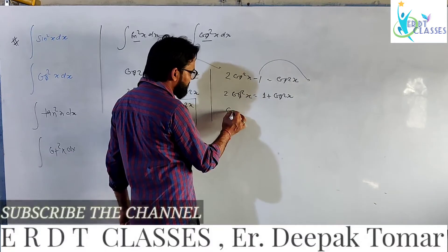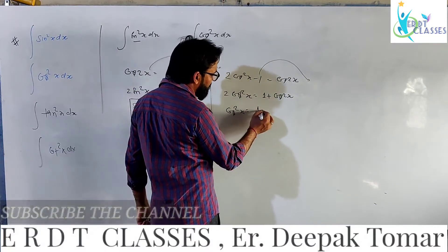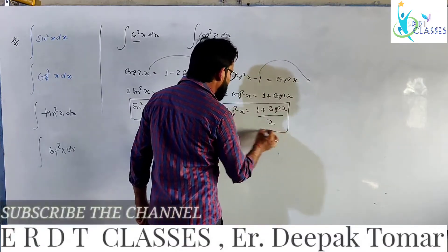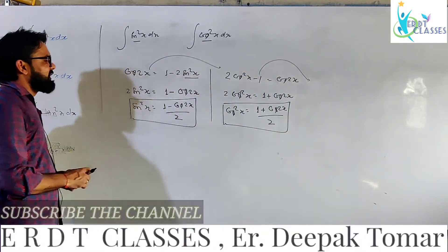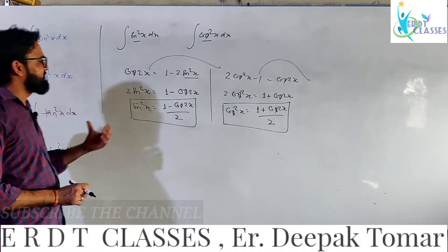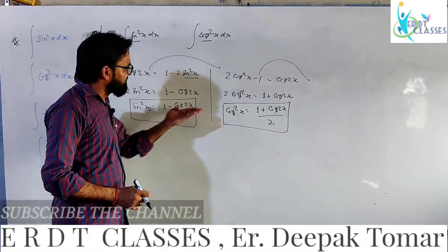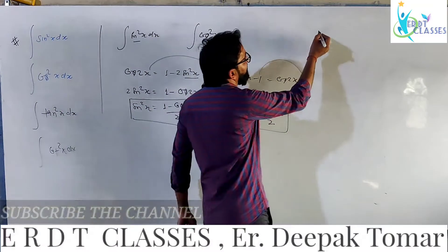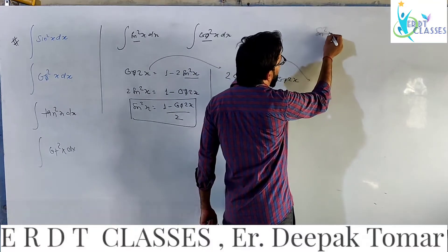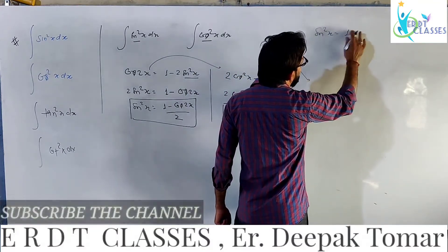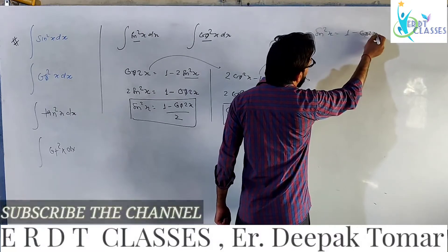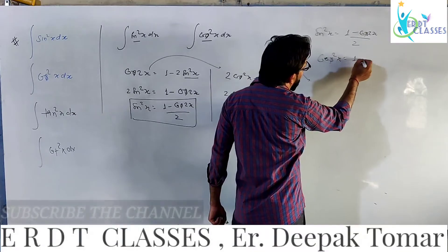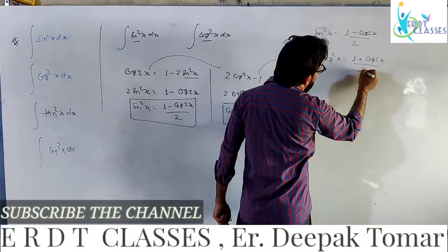Similarly, cos square x is equal to (1 plus cos 2x) over 2. Now we have derived both formulas: sin square x is equal to (1 minus cos 2x) over 2, and cos square x is equal to (1 plus cos 2x) over 2. Both can be done with the help of cos 2x.